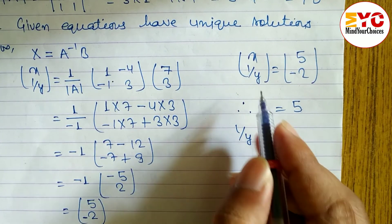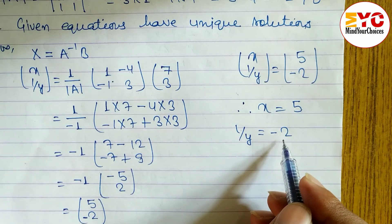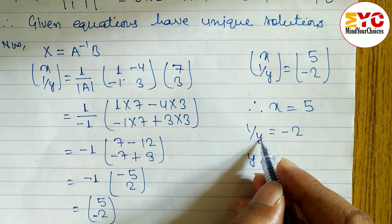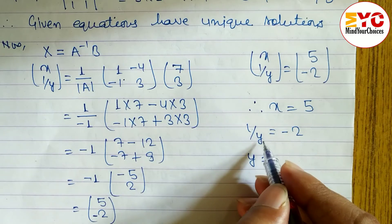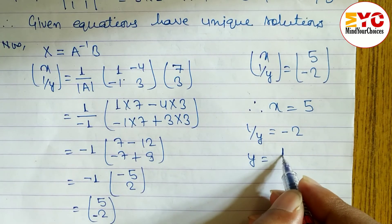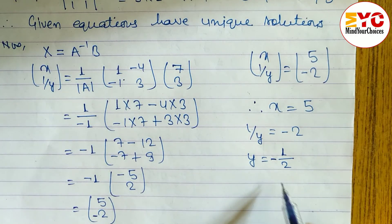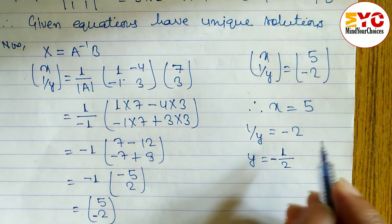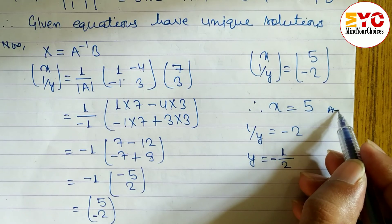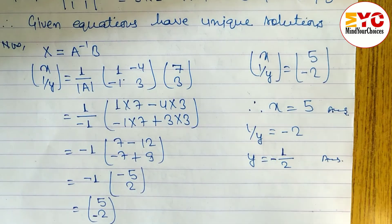Therefore x equals 5, and 1 by y equals -2. Note that it is 1 by y, not y. Since 1 by y equals -2, we cross-multiply to find y: y equals 1 by -2, which is -1 by 2. So the value of x is 5 and the value of y is -1/2.